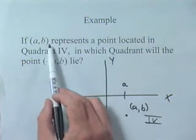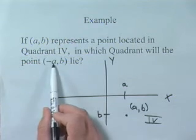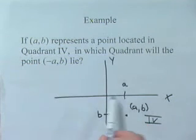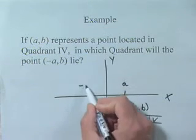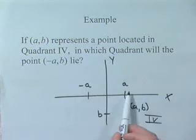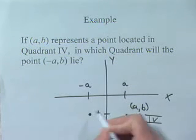Now in which quadrant will the point (-a, b) lie? Well, notice that the y coordinates are the same, so it must have the same y value. But the x coordinate is negative a. Well, if this is a, negative a must be right here. So the point (-a, b) is this point right here. Therefore, we are in quadrant III.